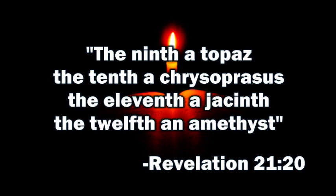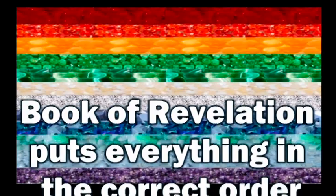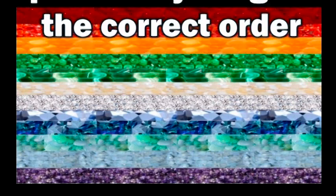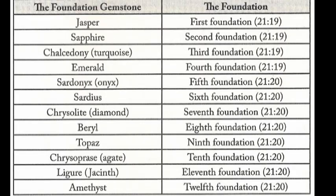Those were the foundations of the walls of the golden city. Revelation puts everything in the correct order for the foundation stones. On the chart: jasper is the first foundation, sapphire the second, chalcedony the third, emerald the fourth, sardonyx the fifth, sardius the sixth, chrysolite or diamond the seventh, beryl the eighth, topaz the ninth, chrysoprase or agate the tenth, ligure or jacinth the eleventh, and amethyst the twelfth.